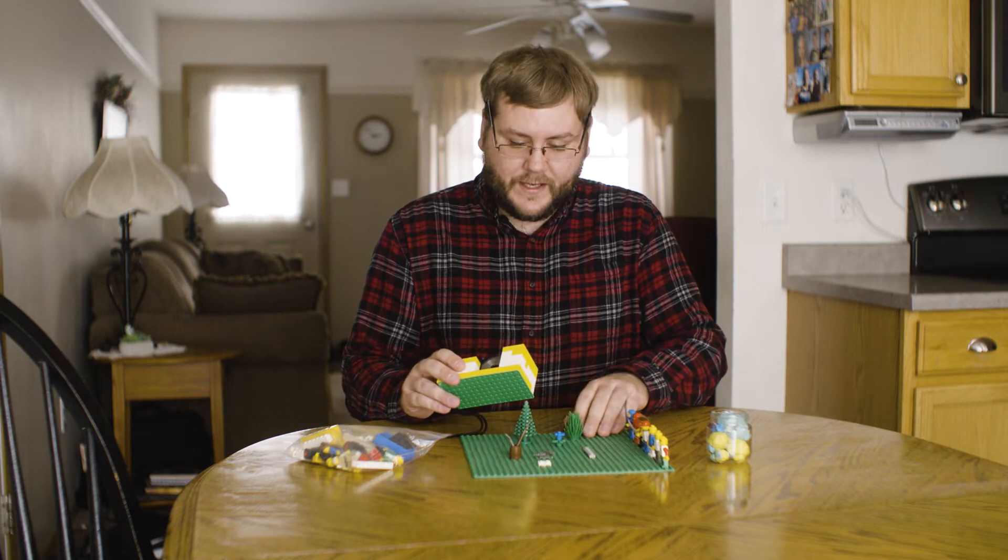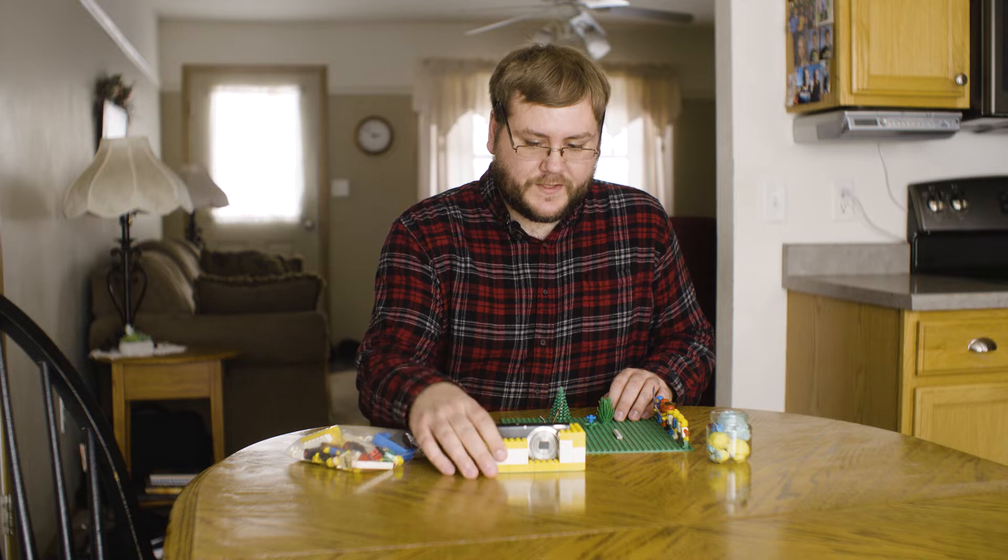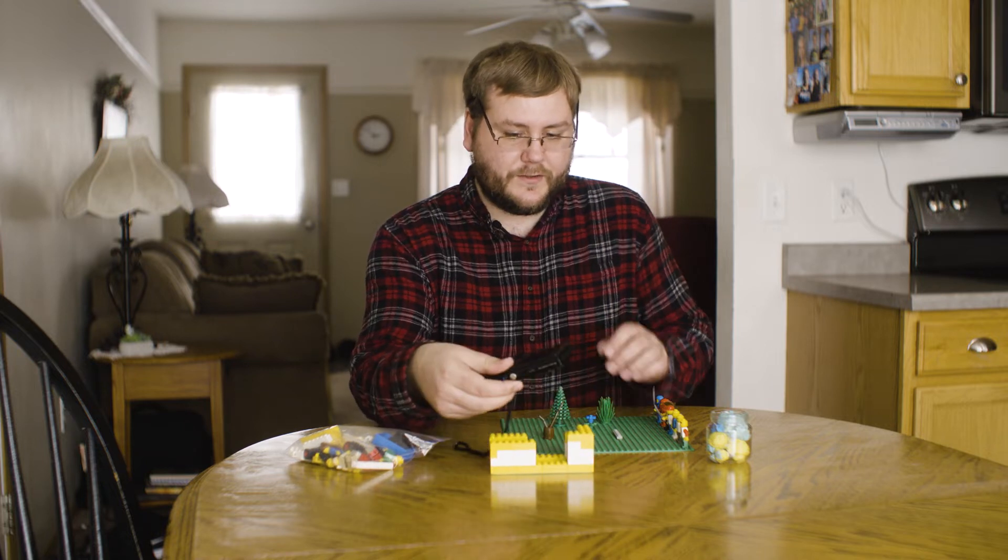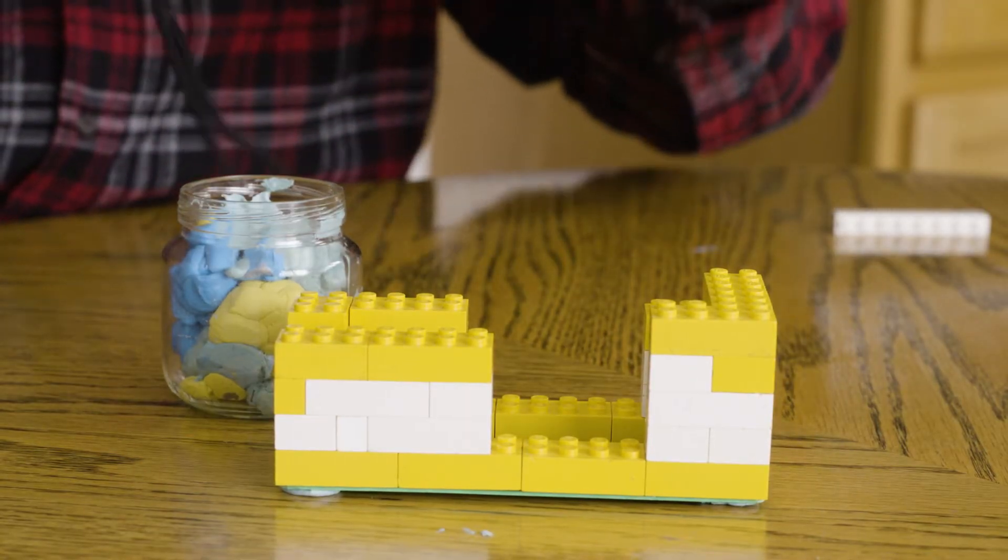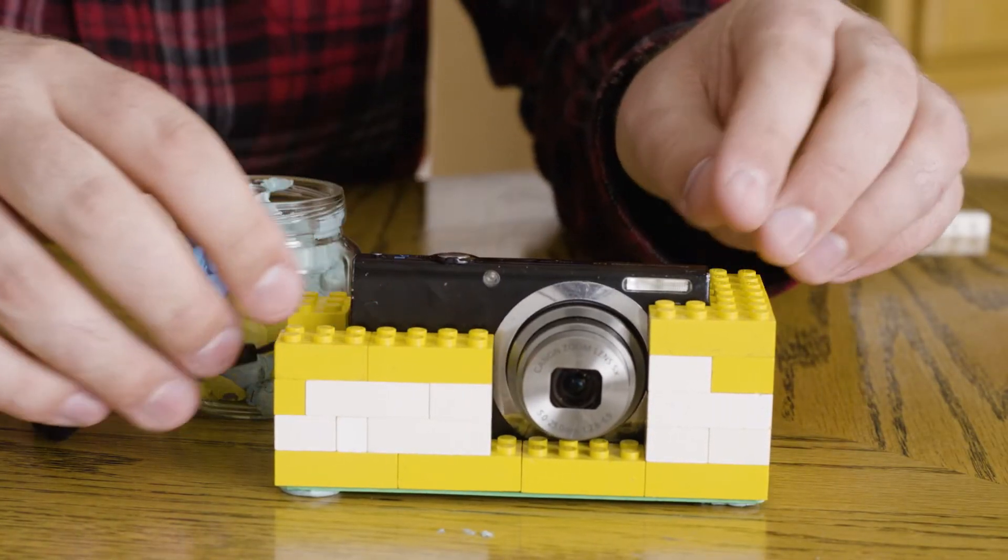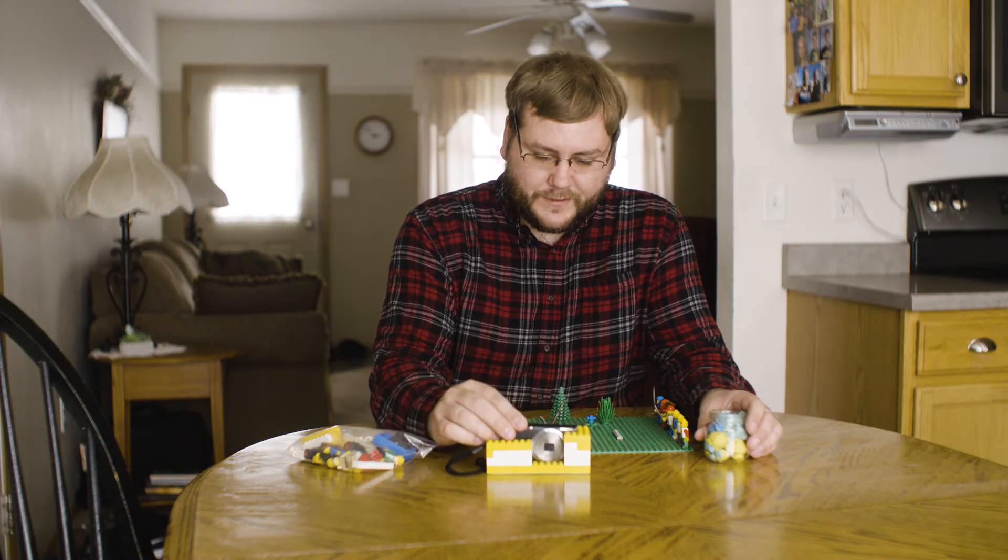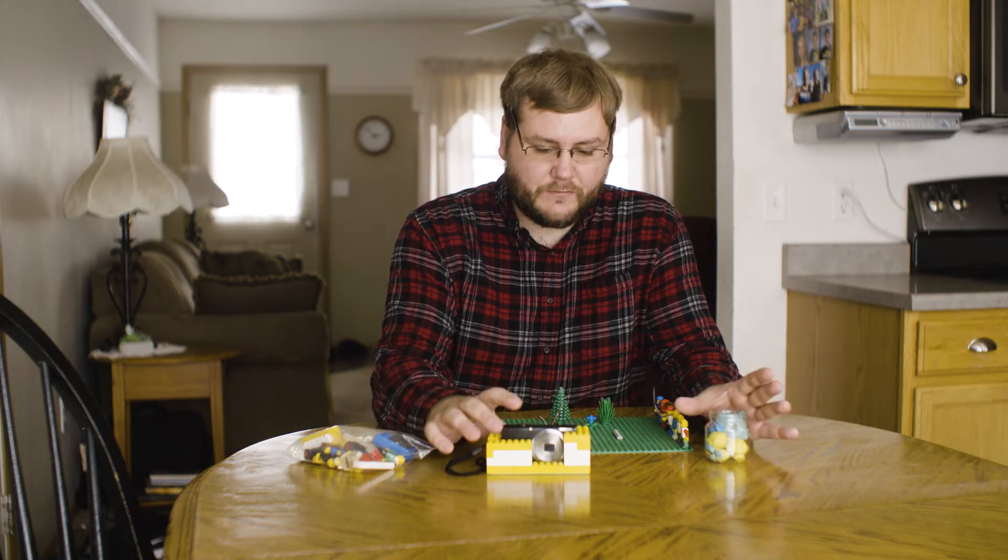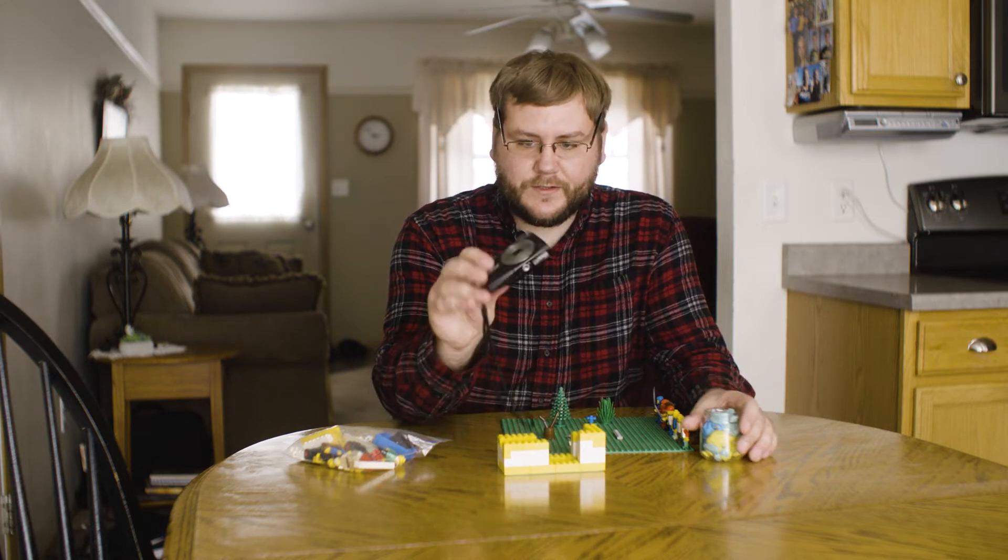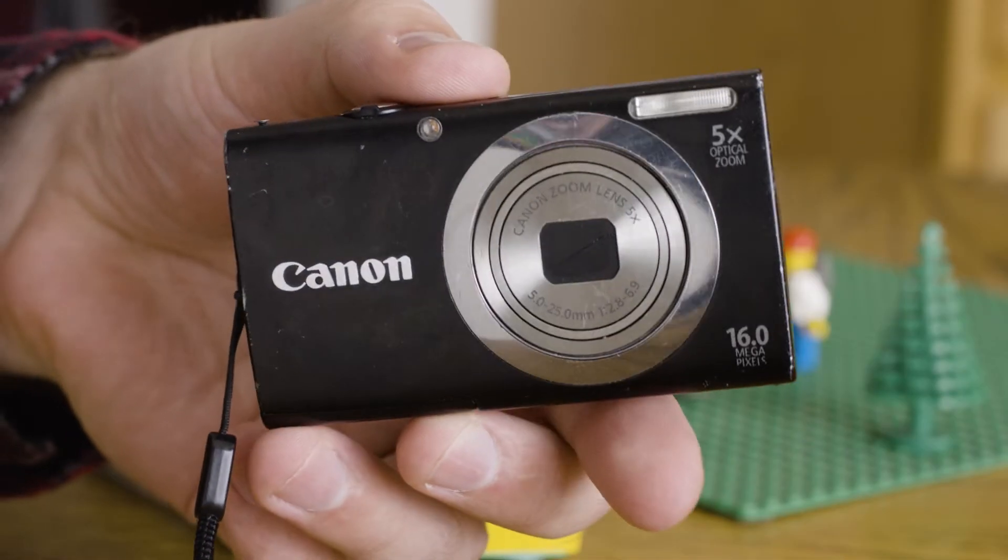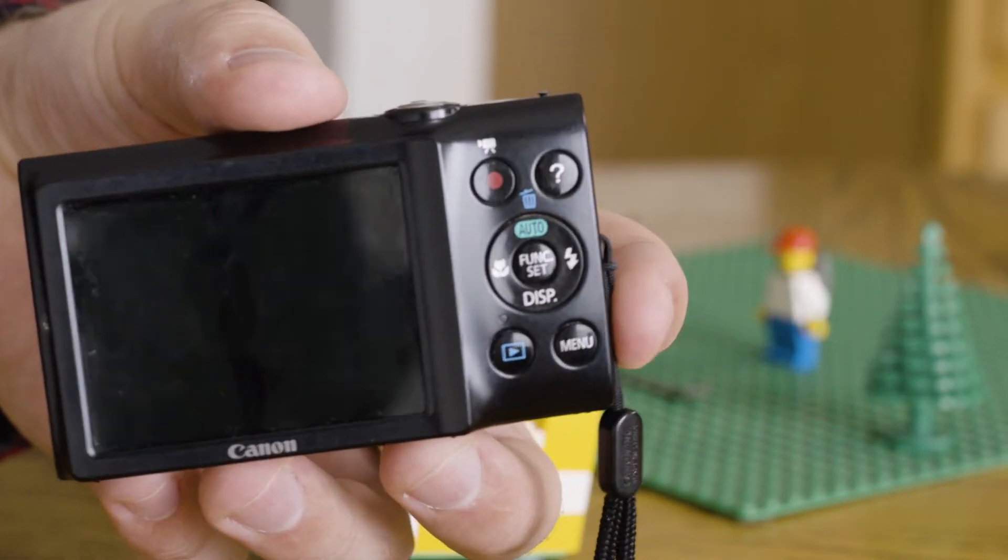The first thing that I like to do is I like to make a little support system for my camera. You can get these little tripods that you can put on cameras, but I like this because you're using LEGOs to keep it in place. You can also use your phone. That would work just as well. But this is actually the exact camera that I used to shoot my stop-motion LEGO film almost 10 years ago now. So I thought it'd be fitting to use this.